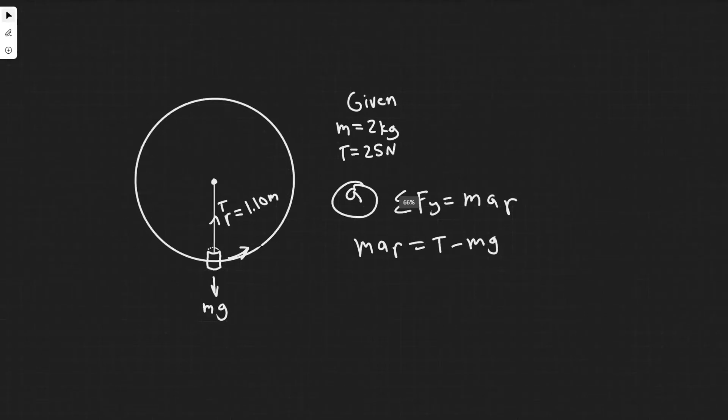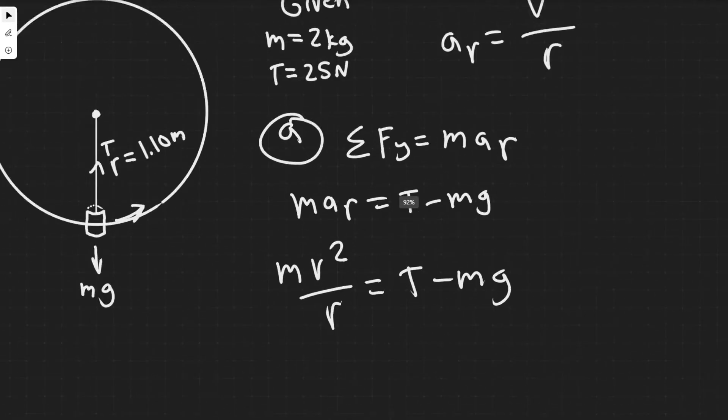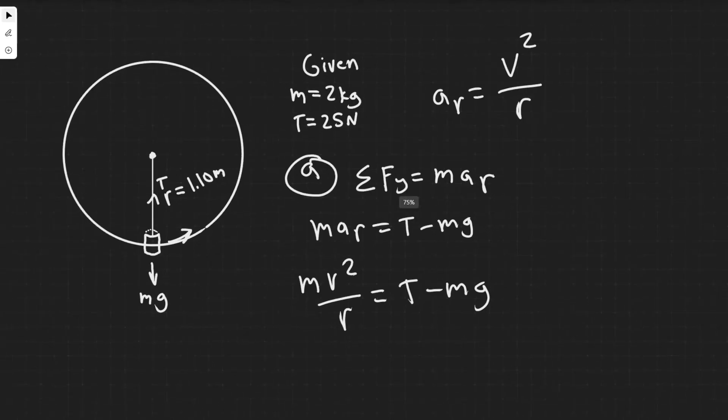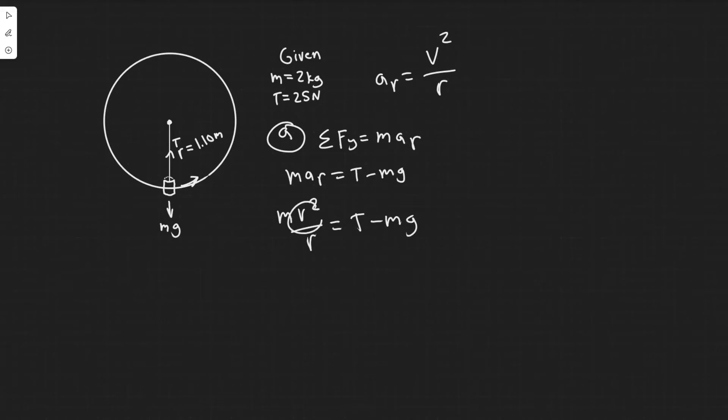Now we know the formula for centripetal acceleration is v squared over r. So we can plug this in and we'll have m*v squared over r equals T minus mg. You'll see here that all it is is just a matter of plugging in now, because we know the tension, we know the mass, and we also know the radius. So we can just solve for v. Multiply both sides by r, so you have v squared equals r times T minus mg, and then divide by m.